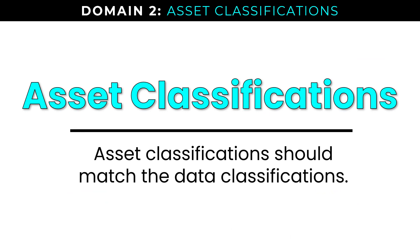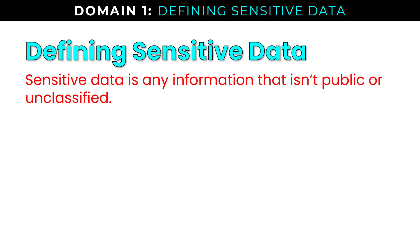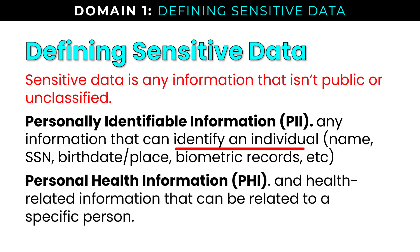Asset classification should typically match data classifications. When it comes to sensitive data, there are two types you want to be very familiar with. Personally identifiable information, or PII, refers to any information that can identify an individual — name, social security number, birthplace or birth date, biometric records, thumbprints, retina scans. Personal health information, or PHI, is health-related information that can be tied back to a specific person, covered by regulatory standards like HIPAA.